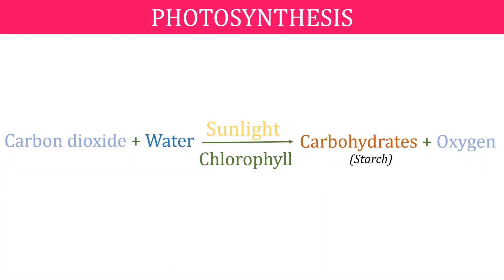Let's recall the process of photosynthesis in plants. Carbon dioxide and water, combined with the help of chlorophyll in the presence of sunlight, form carbohydrates — that is starch — and oxygen.